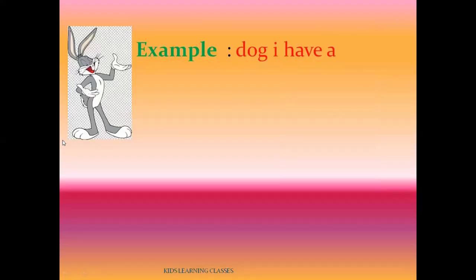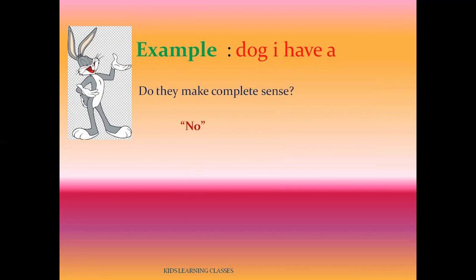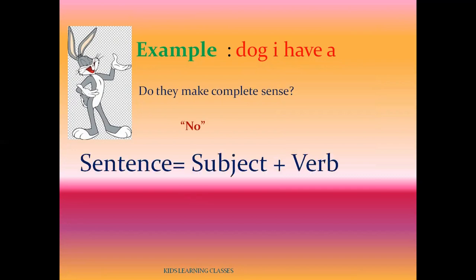Example: 'dog I have a.' Here is the example of 'dog I have a.' Do they make complete sense? No. A sentence is exactly the combination of subject plus verb.